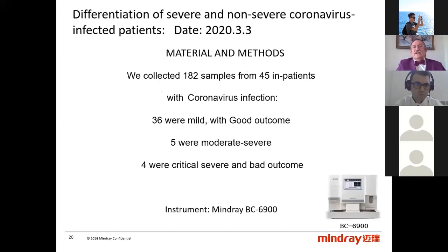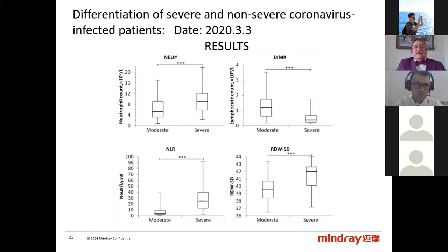We collected 182 samples from 45 in-patients with coronavirus infection: 36 were mild with good outcome, 5 were moderate-severe, and 4 were critical-severe with bad outcome. Here we can see similar results to the previous single case study — an increase with three asterisks showing statistical significance at p less than 0.001, which is very significant.